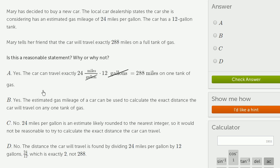Let's read through each of them. The first one says yes, it is a reasonable statement for Mary to tell her friend that the car will travel exactly 288 miles on a full tank of gas. The rationale is the car can travel exactly 24 miles per gallon times 12 gallons. We see that the units,